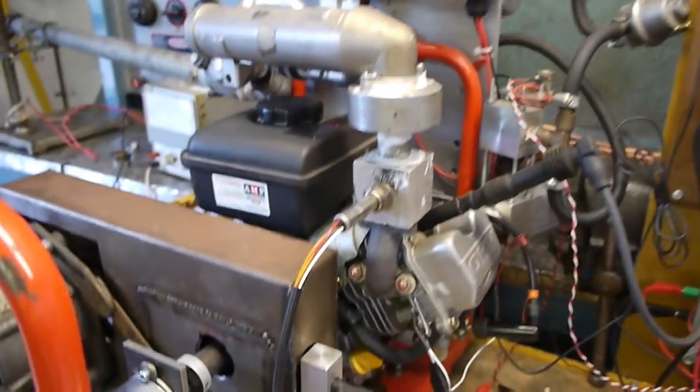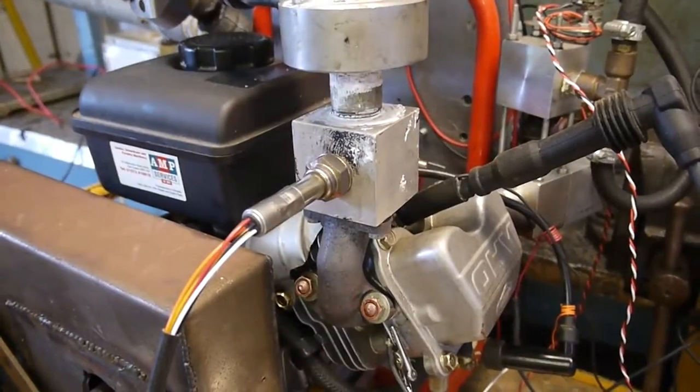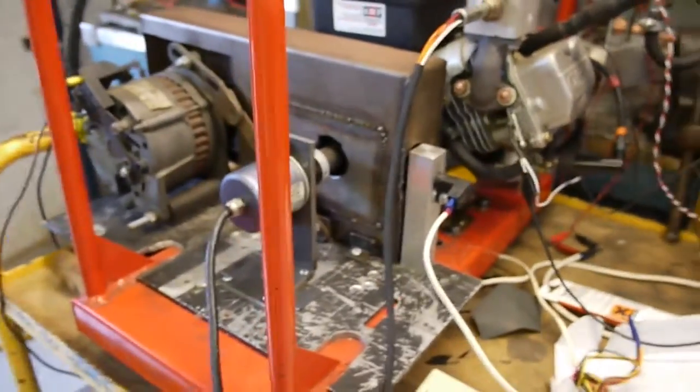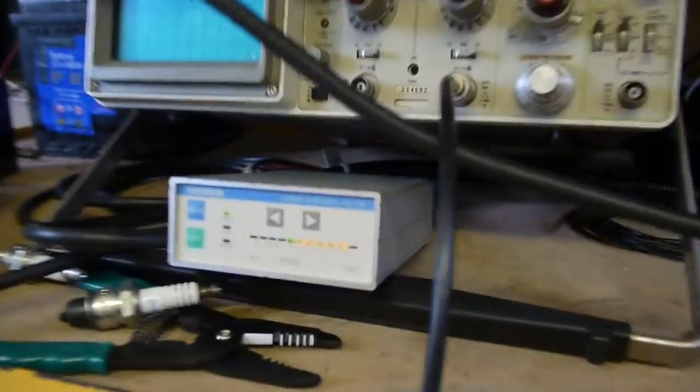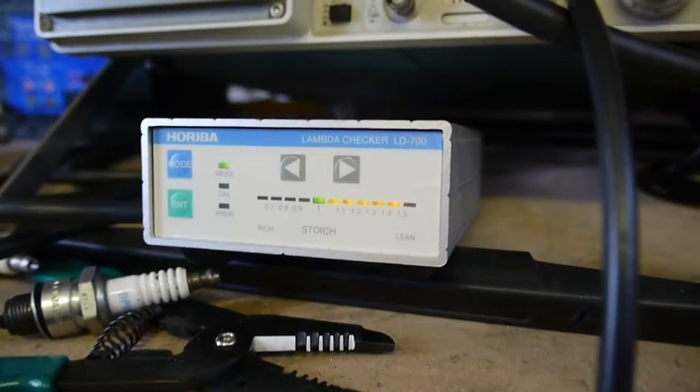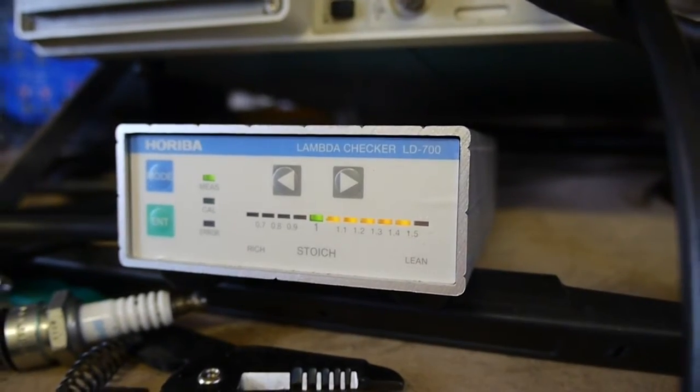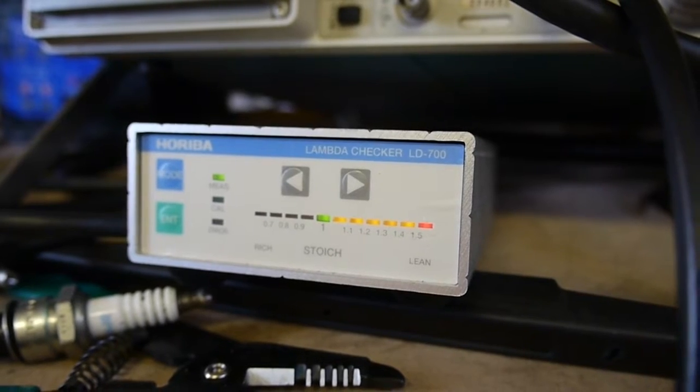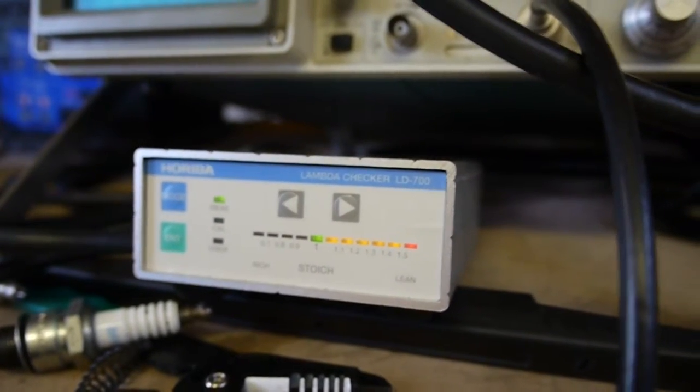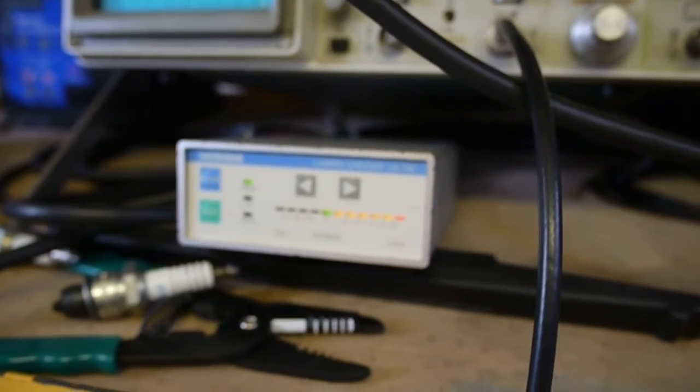And then we've got a lambda sensor in the exhaust, which connects to a lambda sensor interface box. And this outputs a 0 to 5 volt signal, which can go directly again into a microcontroller.